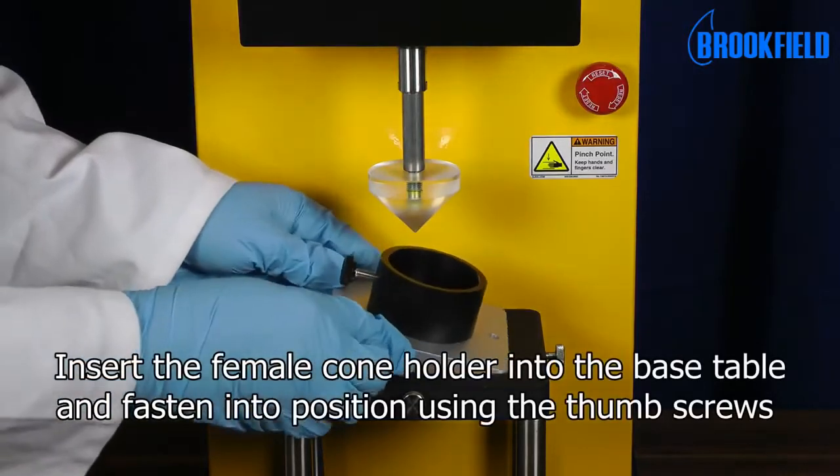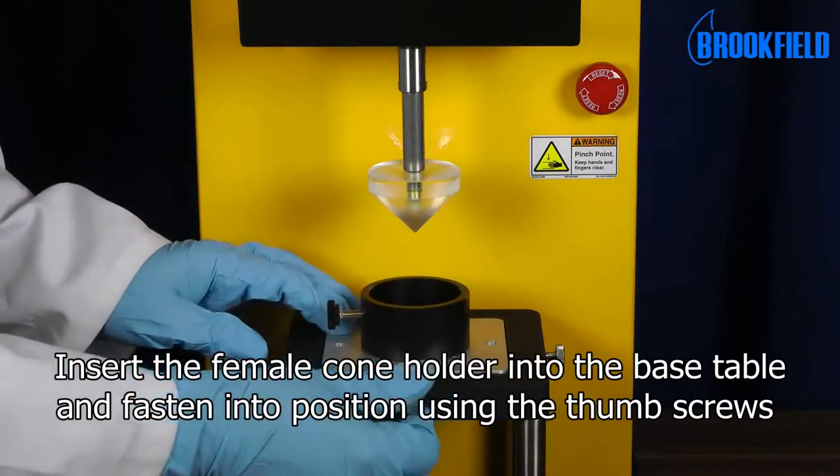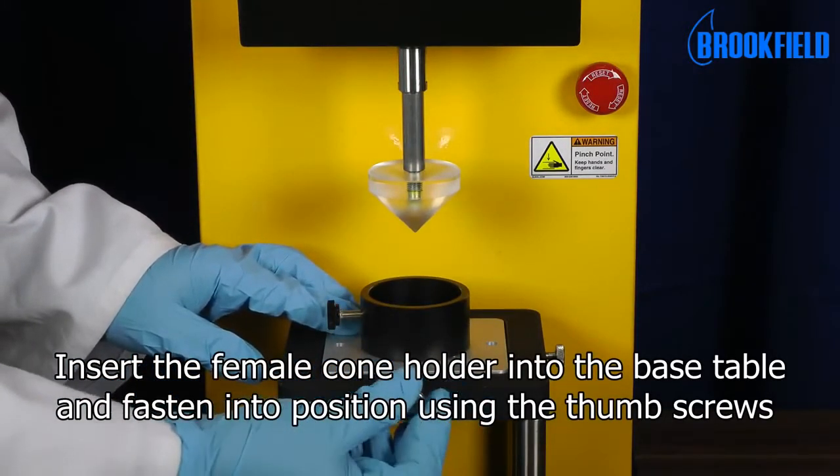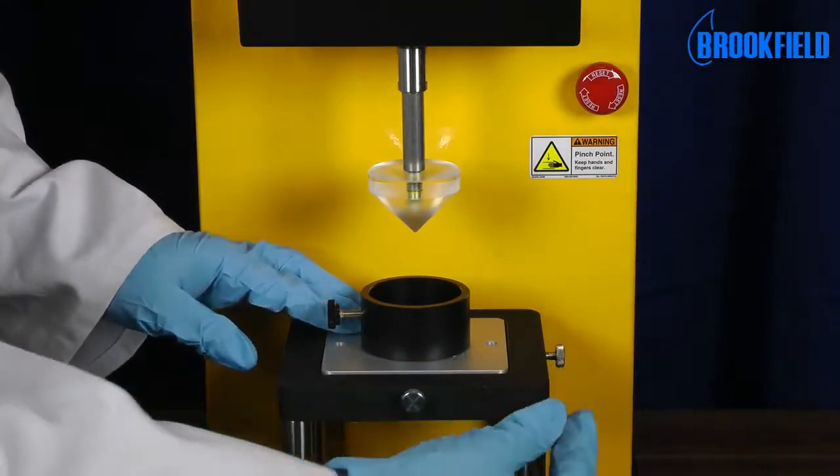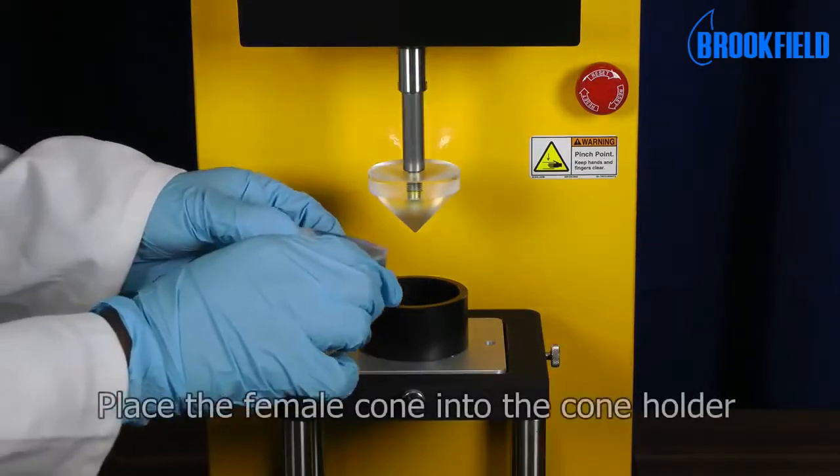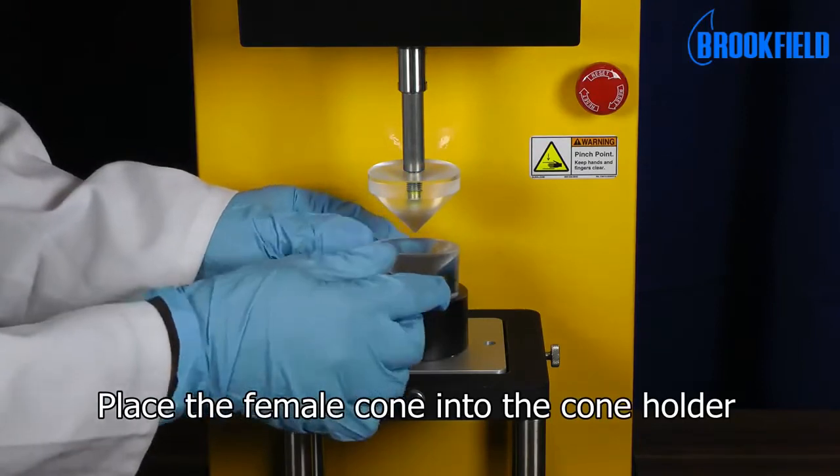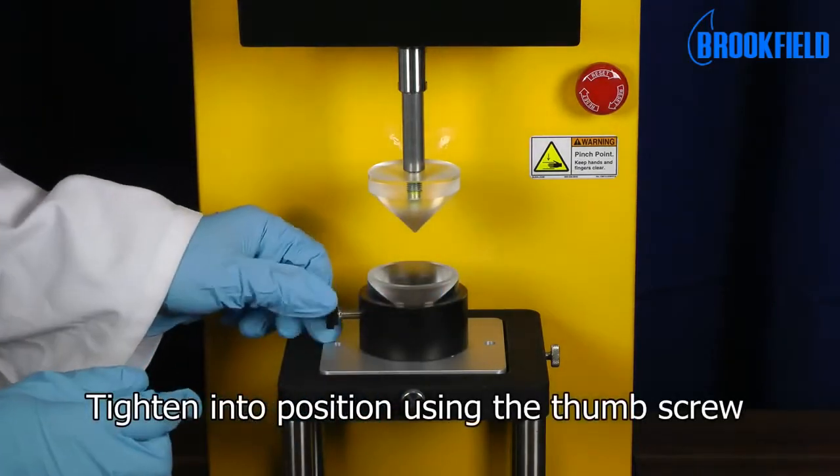Insert the female cone holder into the base table and fasten into position using the thumbscrews. Place the female cone into the cone holder and tighten into position using the thumbscrew.